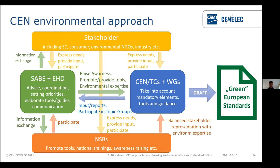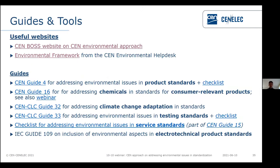The key role lies with the TCs, which ultimately decide the actual content of the standards. Several important guides and tools have been summarized: there is CEN Guide 16 on chemicals and consumer-relevant products — a webinar on this is recorded and available to watch. There are also several guides on product standards and climate change adaptation and testing standards. Some of these have checklists available as Word files so you can easily work with them.